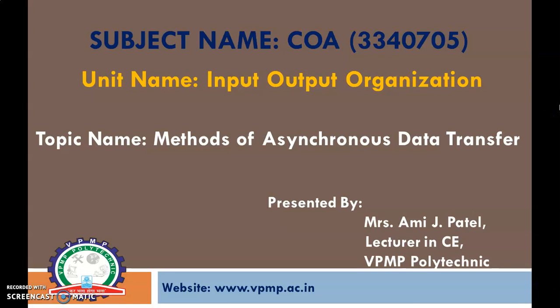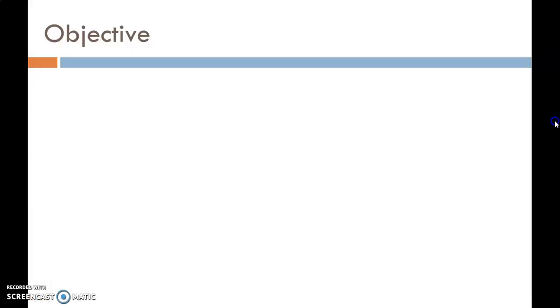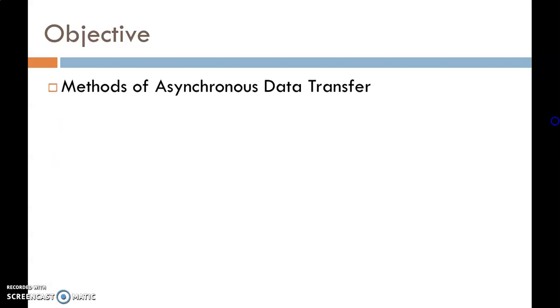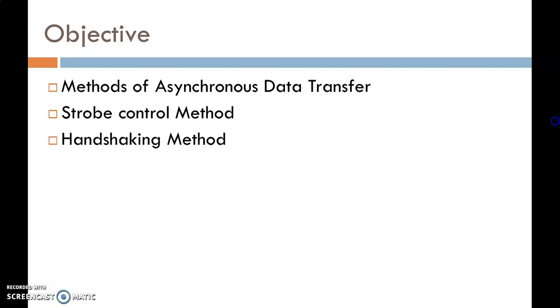Hello students, welcome to my online lecture session of subject COA. Today we will discuss methods of Asynchronous Data Transfer, which is a part of unit five: Input-Output Organization. In this video lecture, we will discuss two types of methods: the first one is Strobe Control and the second is the Handshaking method.